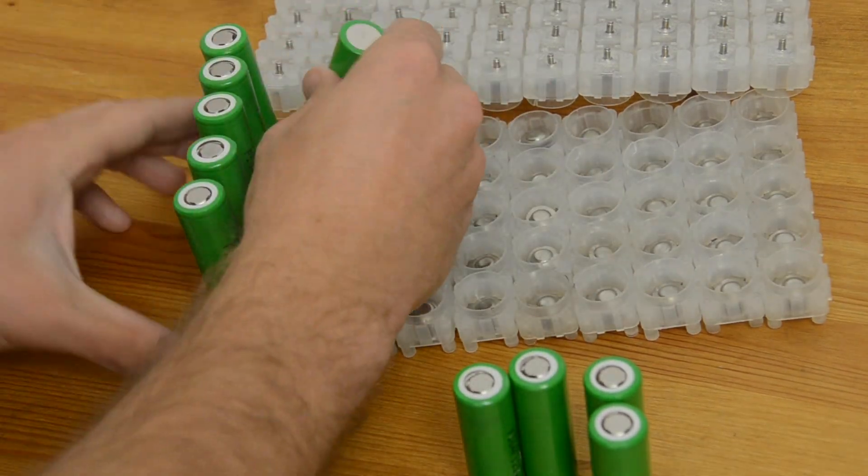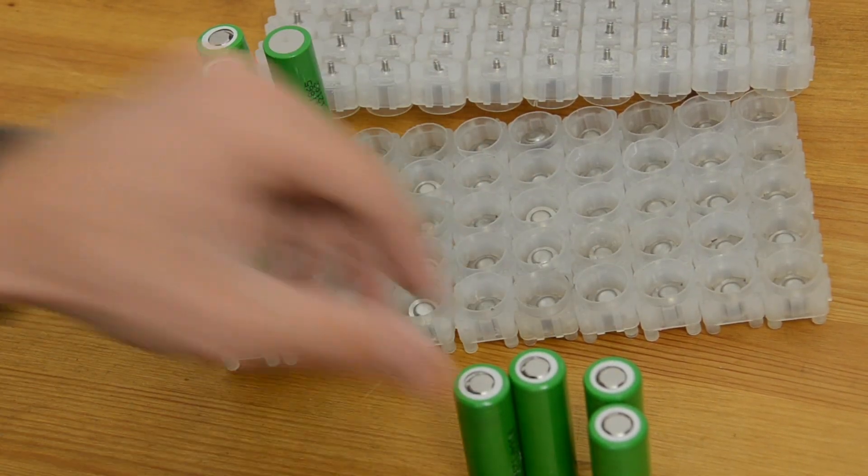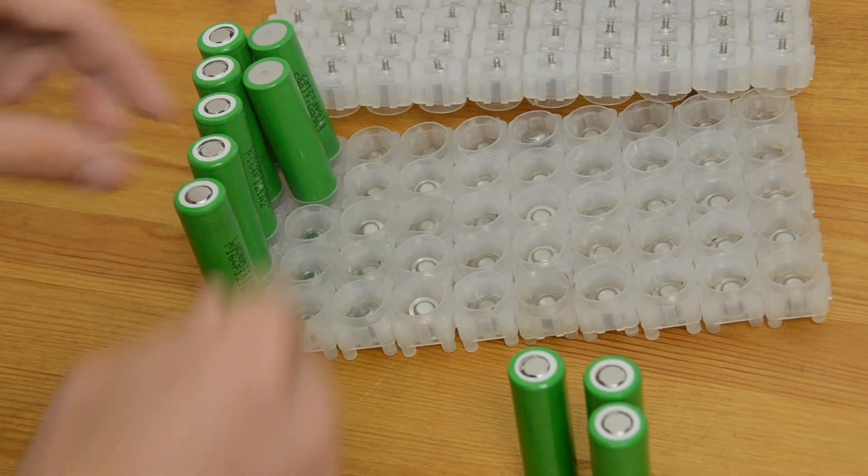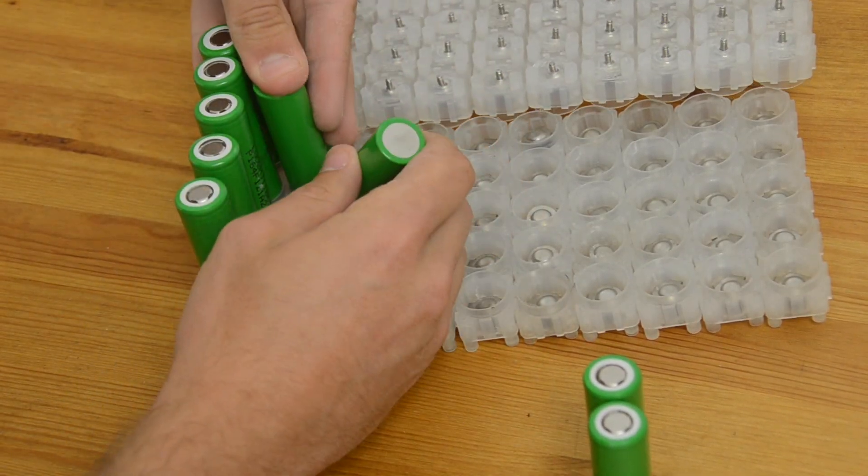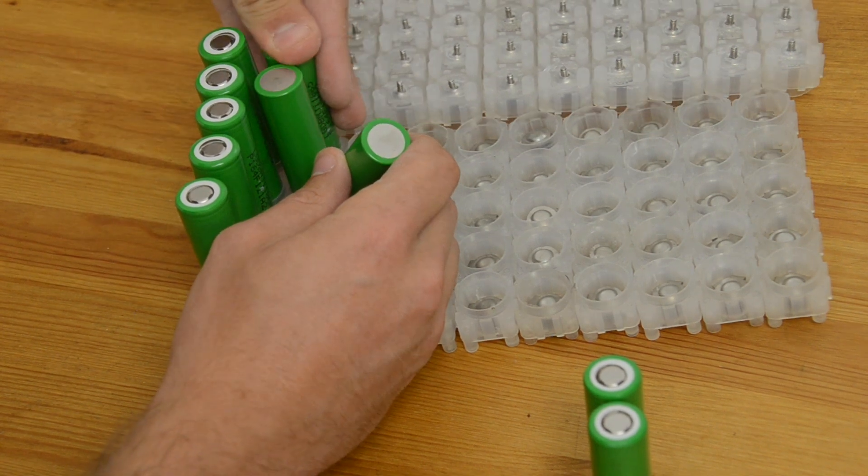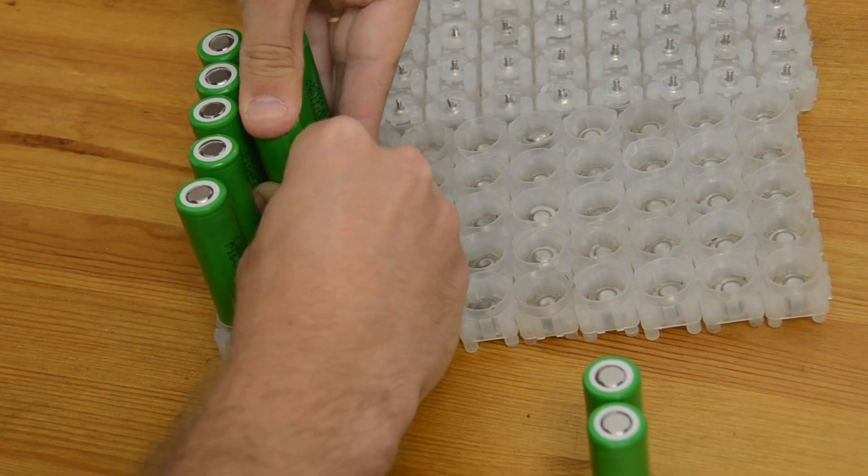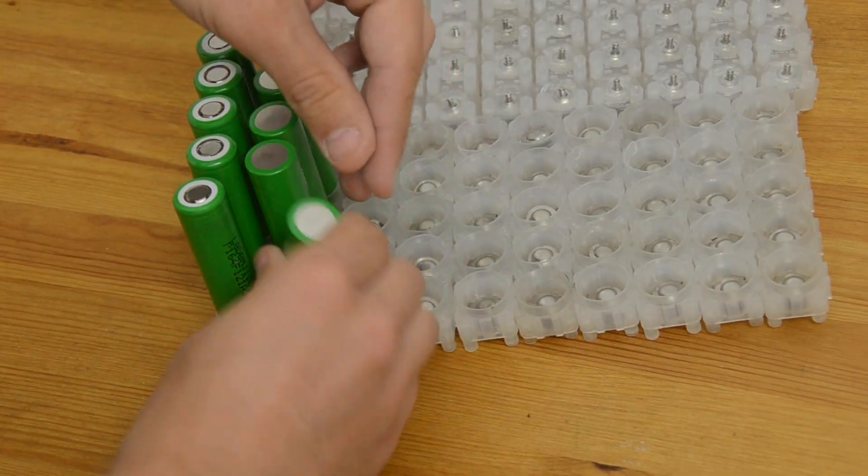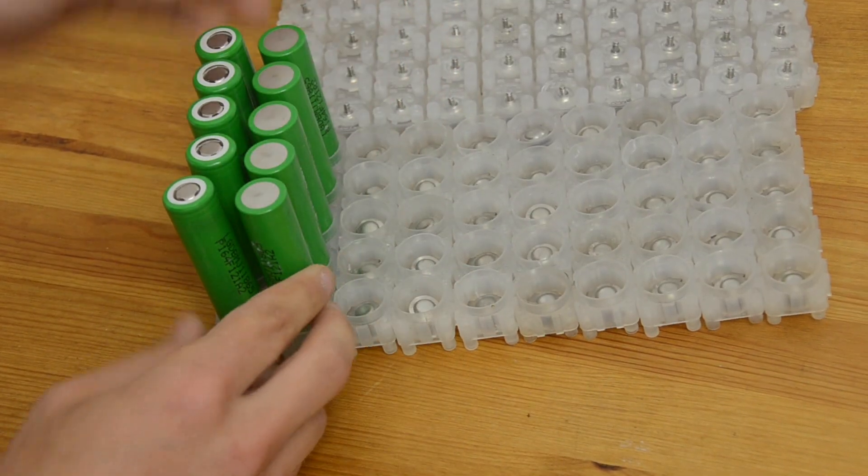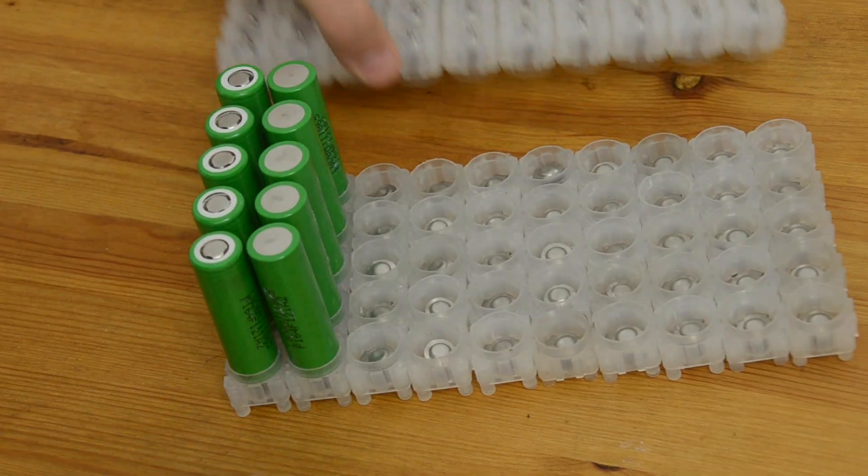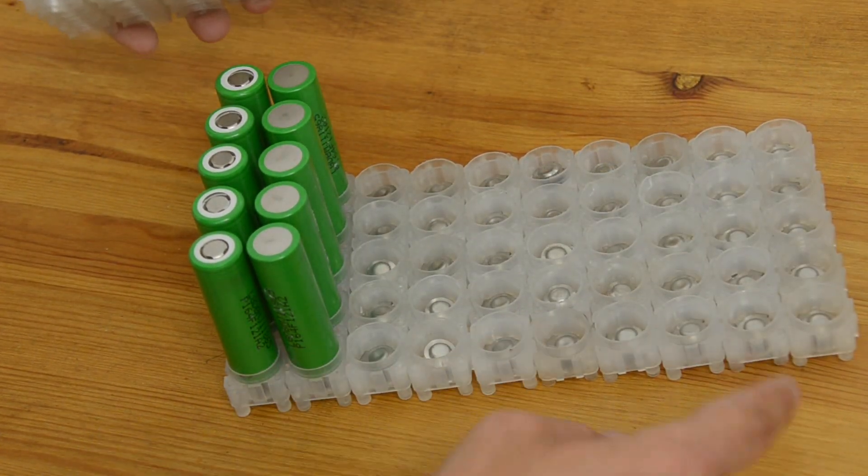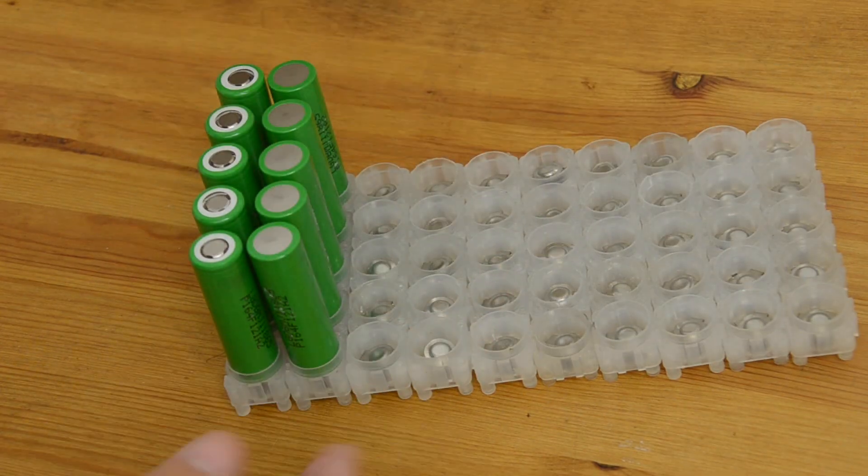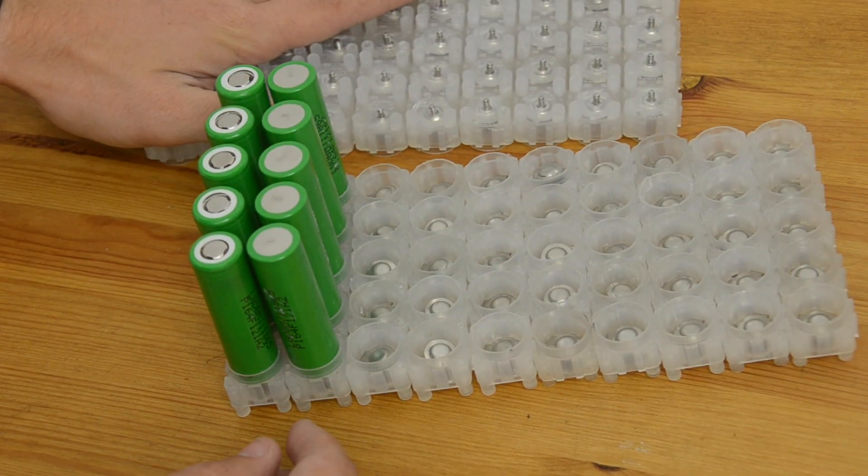Now for my next row of cells. Notice how I'm putting these in upside down. Right? So here you can see the bottom of the cell is actually facing up. And this is important. We want to make sure that every row of cells here alternates. So that the top of one row is up and then the bottom of the next row is up. And that way we'll be able to make our series connections as we build our pack. Now I could continue on filling in all my cells just like this with alternating rows. But I'm actually going to show you a second method on how to build this pack. That for me is just a little bit more convenient.